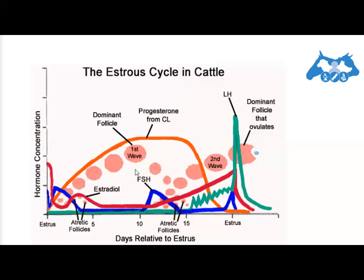Here you can see the FSH first wave and the second wave, which are especially important when the animal is in heat. As the days relative to estrus increase, different processes in the sequence of events are occurring. At the end of the estrous cycle, a dominant follicle ovulates.